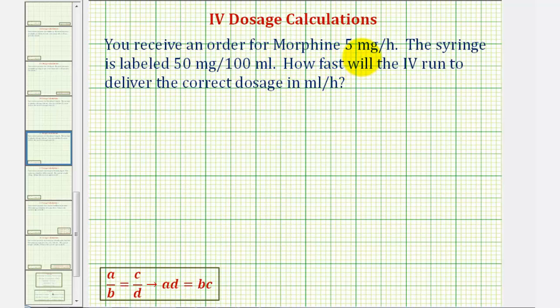You'll receive an order for morphine 5 milligrams per hour. The syringe is labeled 50 milligrams per 100 milliliters. How fast will the IV run to deliver the correct dosage in milliliters per hour?